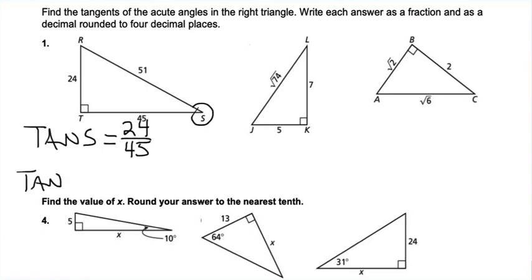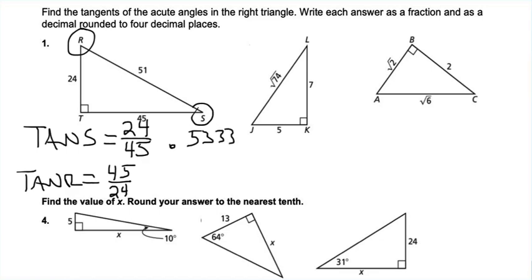The tangent of R: R is my angle. What is opposite? That is 45. The adjacent side is 24. So tangent of R equals 45 over 24. Then rounding to four decimal places: 24 divided by 45 gives 0.5333 repeating, and 45 divided by 24 gives 1.875, so we add a zero to get 1.8750.